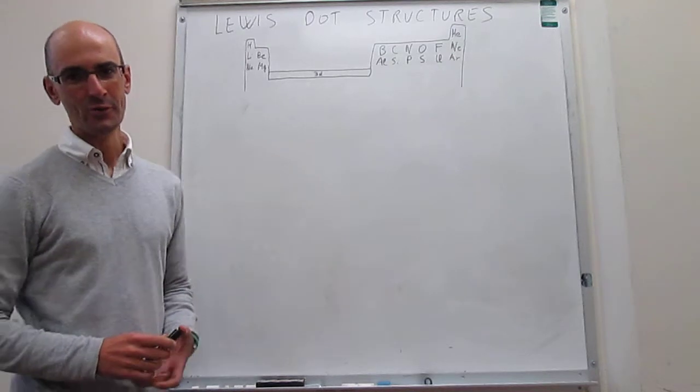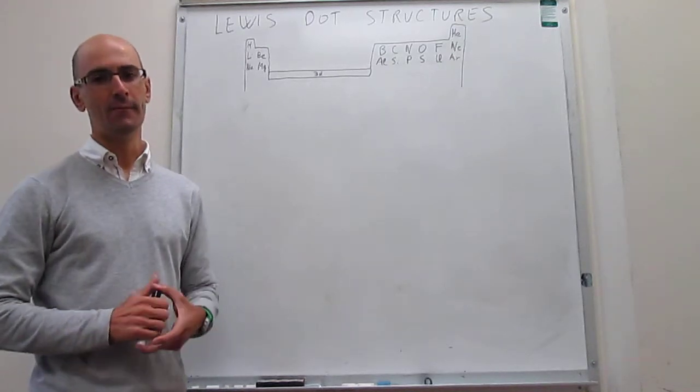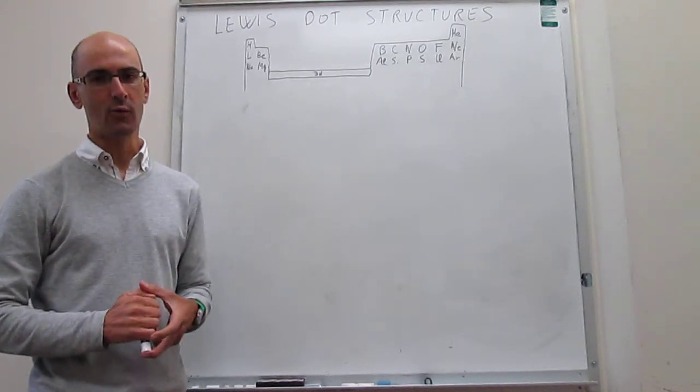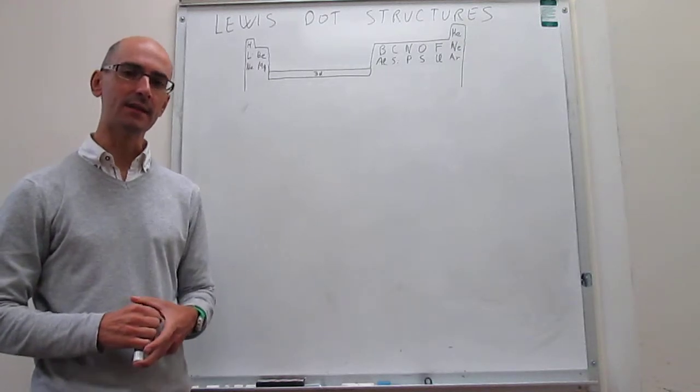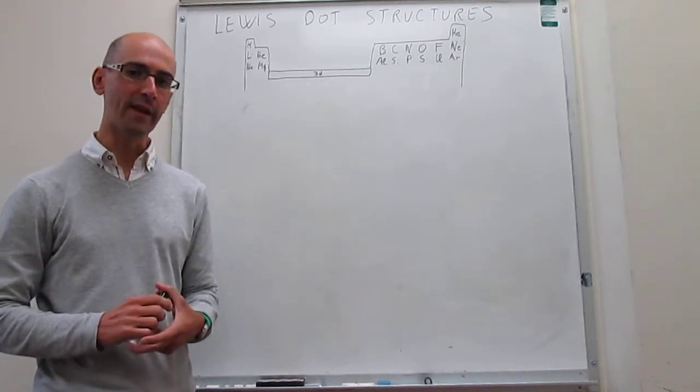In this video we'll learn how to draw Lewis dot structures for molecules that have atoms with expanded octets. That means there's atoms with more than 8 electrons.